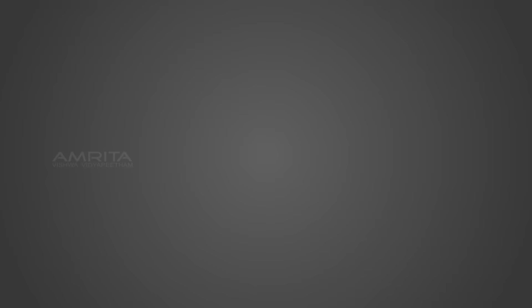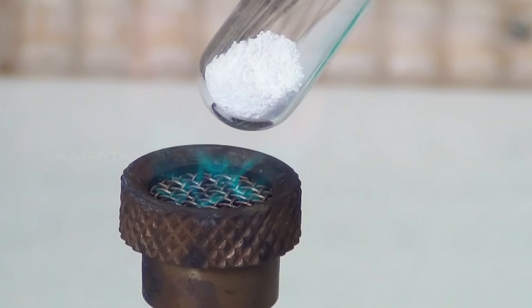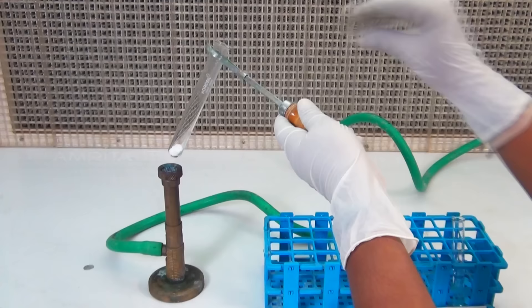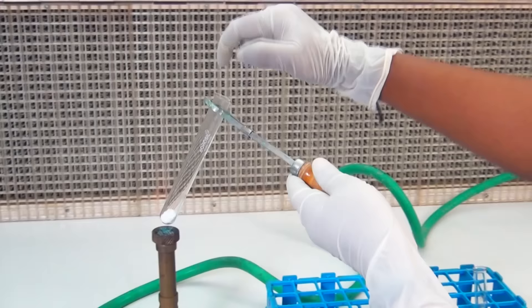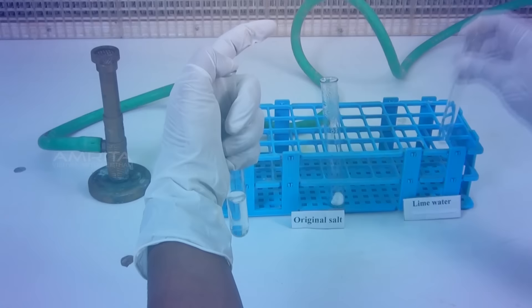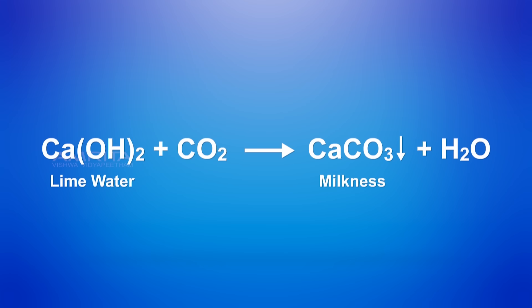Procedure: Take a small quantity of the salt in a test tube and heat it over the Bunsen burner. On heating, oxalate undergoes decomposition to evolve the colourless and odourless gas carbon dioxide. Cover the test tube containing the salt with an empty test tube and collect the gas. Now pour lime water into the test tube filled with gas. The lime water, which is a dilute solution of calcium hydroxide, reacts with carbon dioxide to form insoluble calcium carbonate, which turns lime water milky.